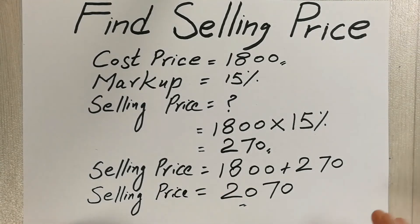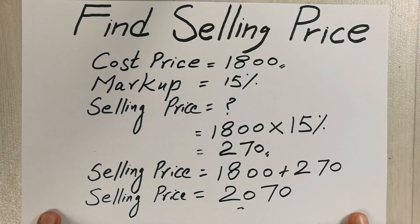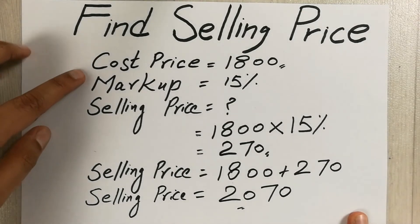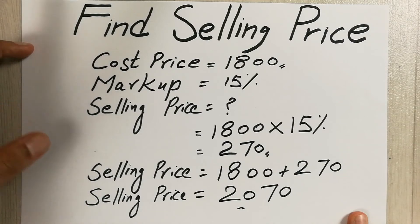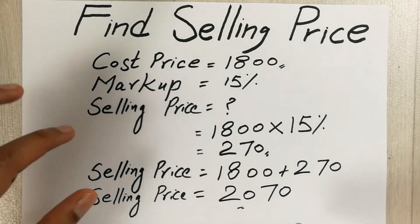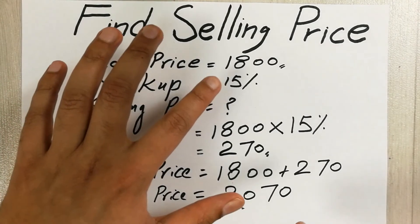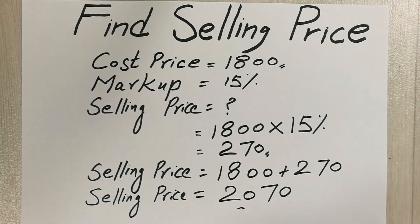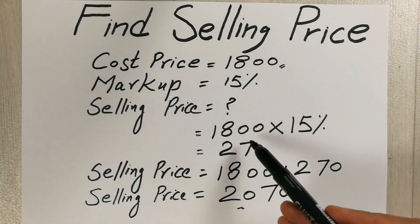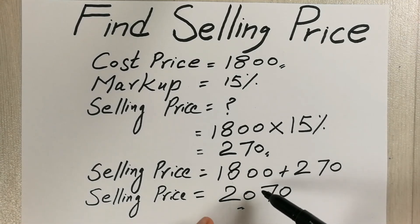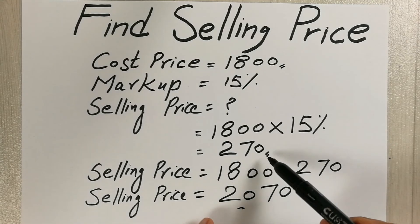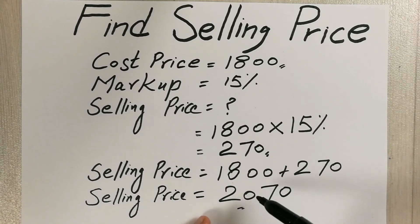This is how you can find out the selling price. The cost price is already given to you and the markup is already given to you, so it is very simple. In the first step, 15 percent of 1800 gives us 270, and in the next step we simply add 270 with 1800 to get the selling price.